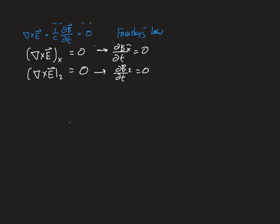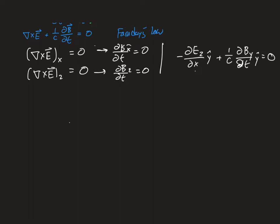That means for Faraday's law we only have one component, and that is in the y direction. Using the expression I just derived for the curl of E and the time derivative of B, the equation is: the derivative of Ez with respect to x in the y-hat direction equals minus the derivative of By with respect to t in the y-hat direction. This mixing of components is very characteristic of electromagnetic waves.